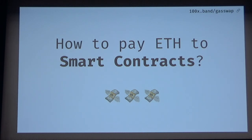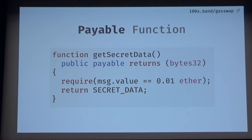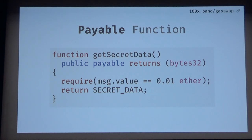The first question would be: how do you pay ETH to smart contracts right now? Pretty simple — you have a payable function. This function gets secret data, you just call it, it checks whether you pass enough ETH, and if you do, it returns you the secret data.